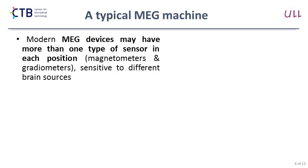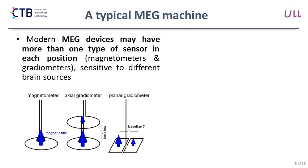Modern MEG devices may have more than one type of sensor — for example, the one in the laboratory in Madrid with Elekta has magnetometers and planar gradiometers. Magnetometers are sensitive to the magnetic field at every depth, more sensitive to shallower sources but also to deeper ones. Whereas planar gradiometers measure the difference between two points, removing contributions from deeper sources and being sensitive mainly to shallower sources. By combining different sensor types we can target different sources of magnetic activity.